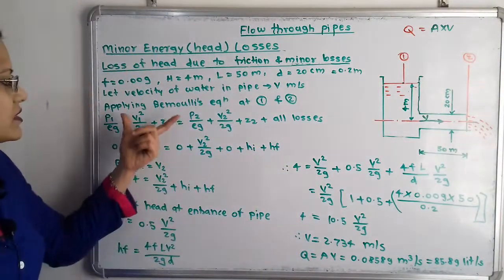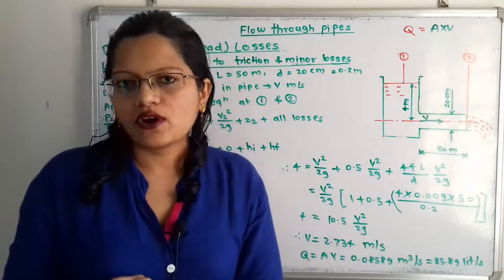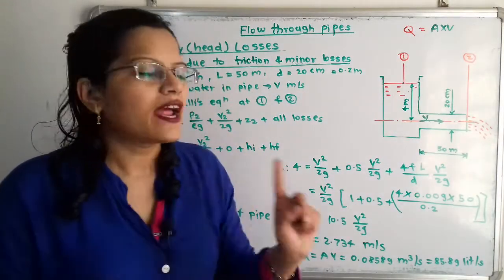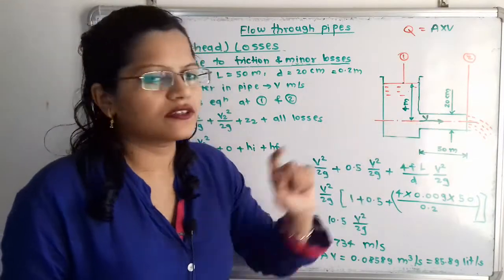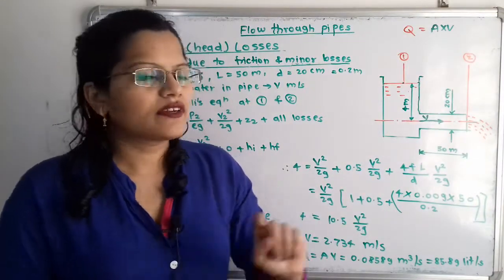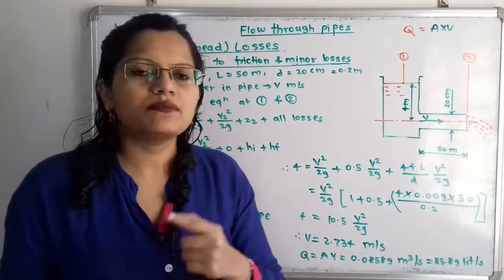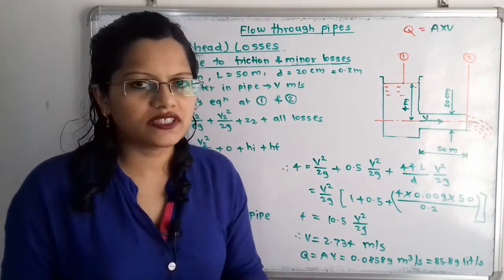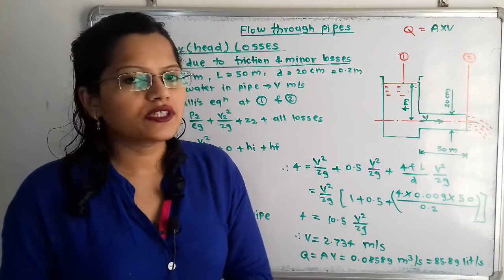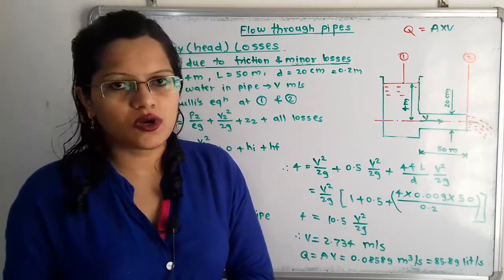For these two sections we apply Bernoulli's equation, considering the head loss due to friction and the head loss at the entrance of the pipe. The Bernoulli's equation is: P1/ρg + V1²/2g + Z1 = P2/ρg + V2²/2g + Z2 + all losses.